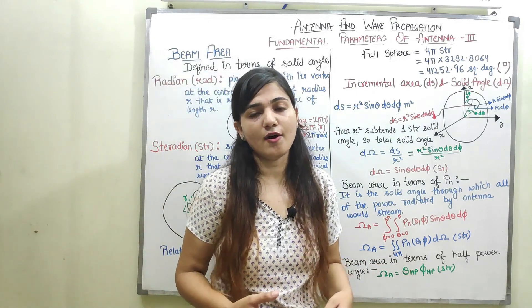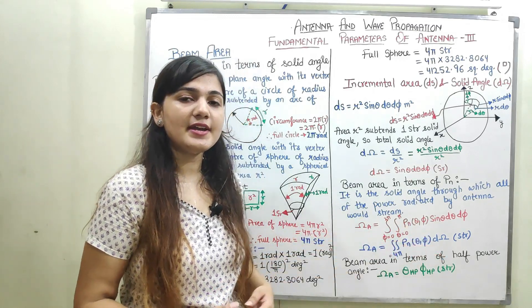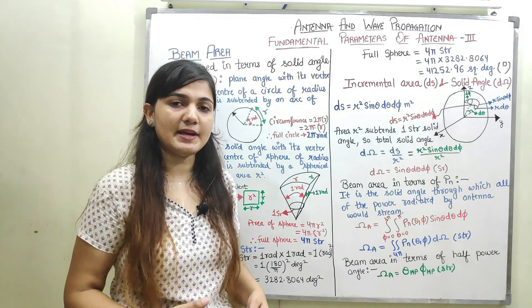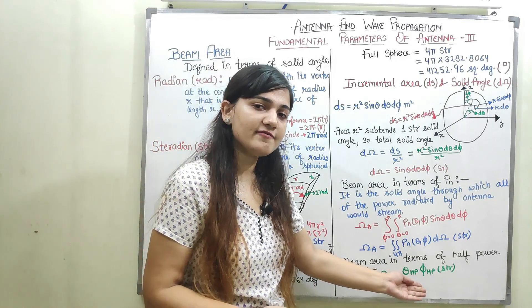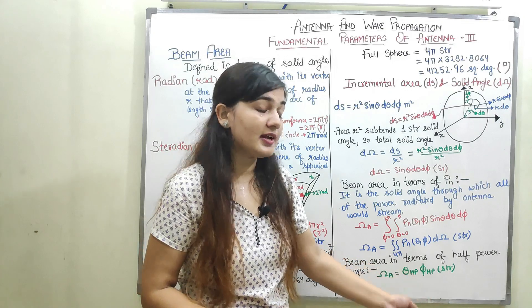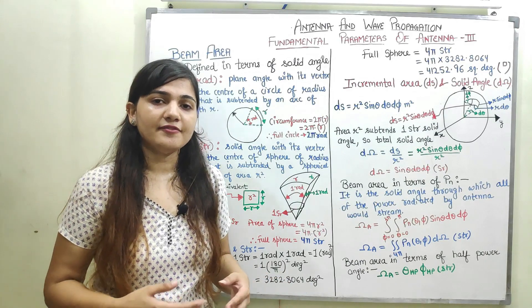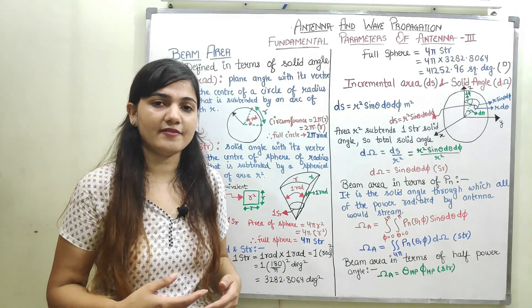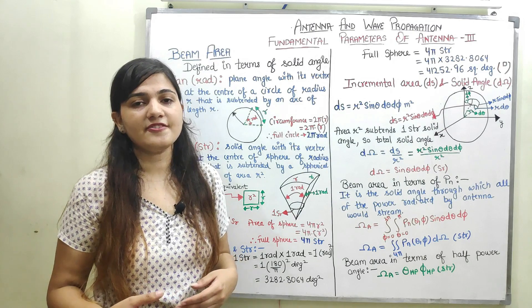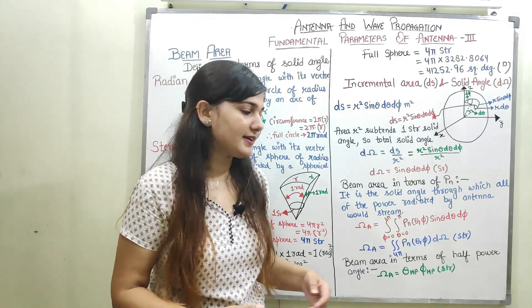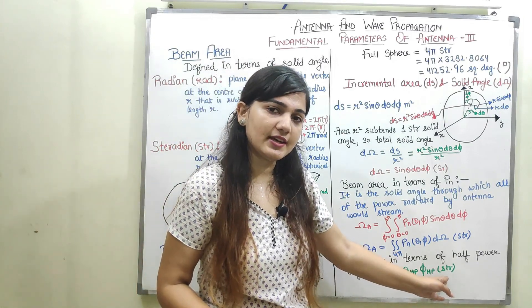There is also a formula for finding beam area from half-power beamwidths: beam area equals θ_HP multiplied by φ_HP, where θ_HP is the half-power beamwidth in the E-plane and φ_HP is the half-power beamwidth in the H-plane. Their product gives the beam area in steradians.